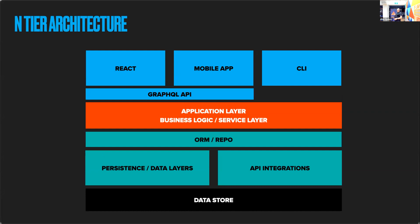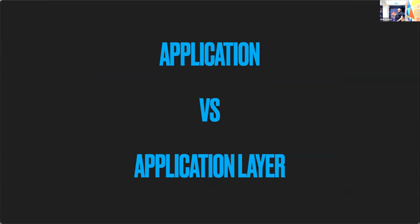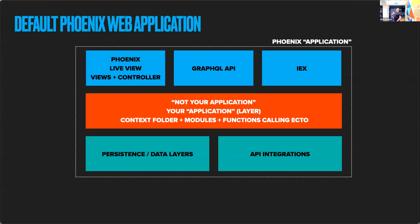There's the idea of an n-tier architecture with other layers that can be added in here, but it's questionable where they belong. For example, an API layer — is that really its own thing? It's kind of part of your application and how it represents itself to the user, but it could also be seen as a presentational layer for external clients. What I want to be clear about is the difference between 'an application' and 'an application layer.' When we say Phoenix isn't your application, what we really mean is it's not your application layer.